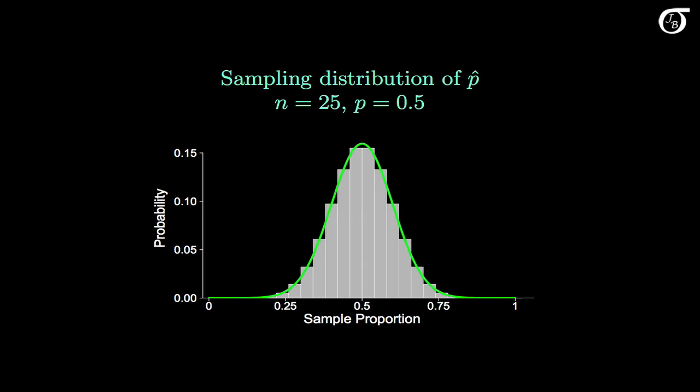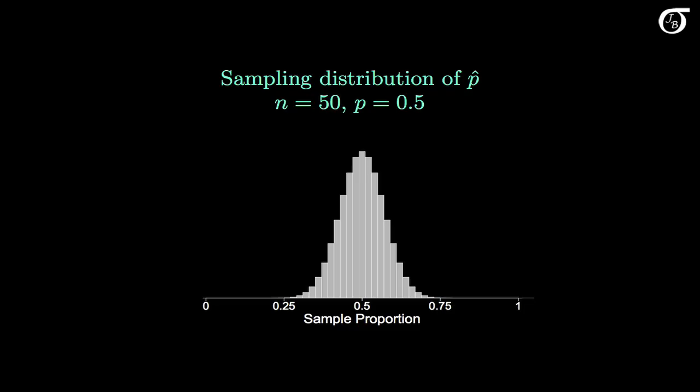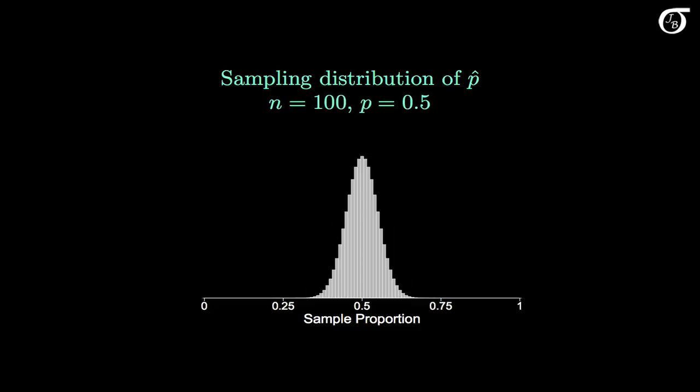Now I'm going to increase the sample size and see what happens — I'll leave the x-axis unchanged but the y-axis scaling will change from plot to plot. Here's the sampling distribution of P-hat for a sample size of 50, which looks a little more normal. For a sample size of 100, it looks more normal still, and a superimposed normal curve fits the distribution very closely. We didn't need a very large sample size for the normal approximation to be reasonable when P is 0.5, but when P is closer to 0 or 1, there will be some skewness and a larger sample size will be needed.